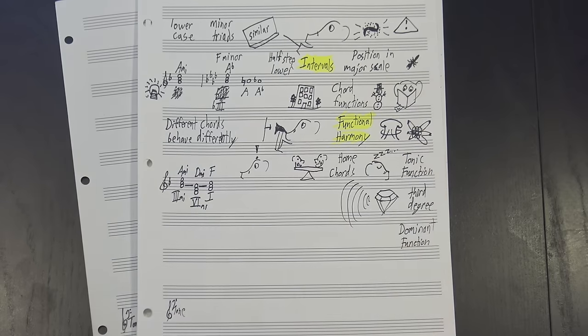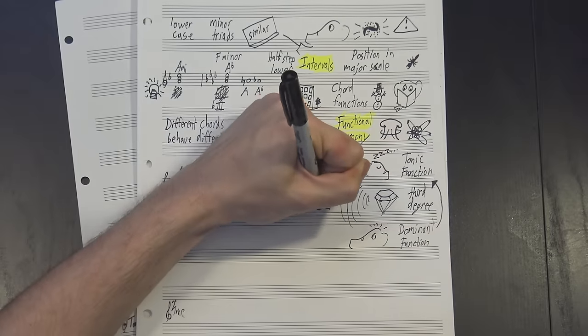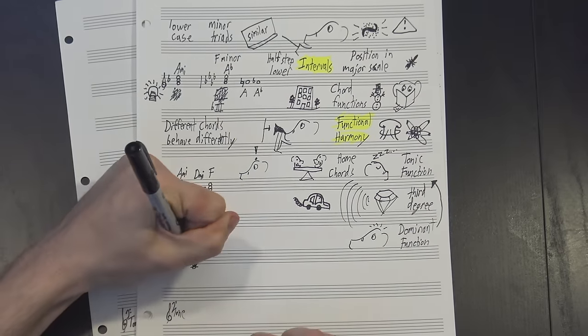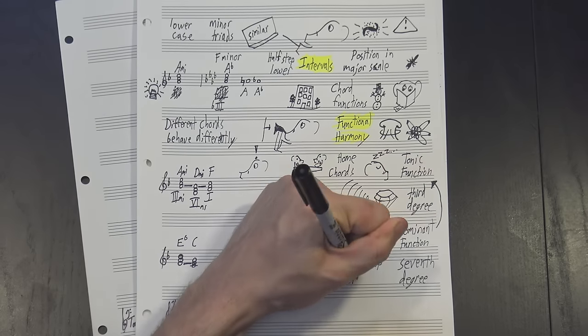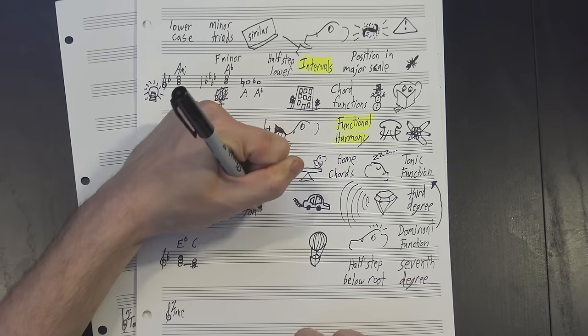The second group is called dominant function. These are unstable chords that point you back to the tonic, and they're the main engine that drives songs forward. These include the V chord and the VII diminished, which both contain the seventh degree of the scale. This is a half-step below the root, and it has such a powerful pull upwards that theorists often call it the leading tone.